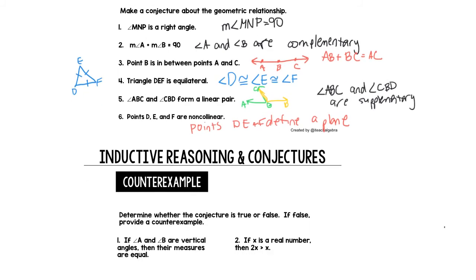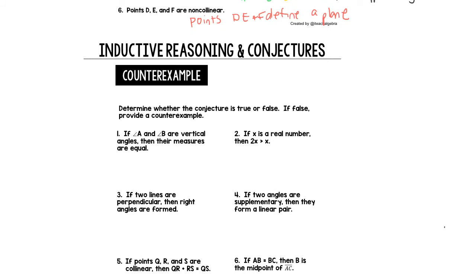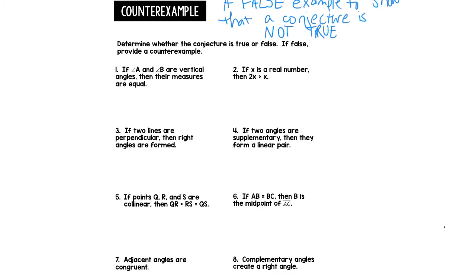The next part of all this is the counter example. The counter example is like what we use to show you that something is not true. So it is a false example to show that a conjecture is not true. This is where we disprove things from being true. So in these examples, we're going to determine if these are true or false. And if they're false, we're going to provide a counter example.